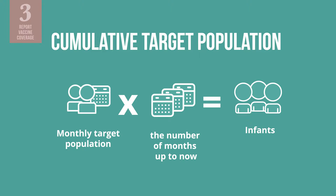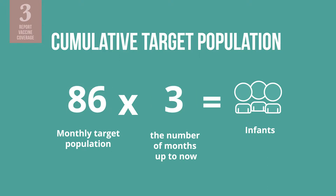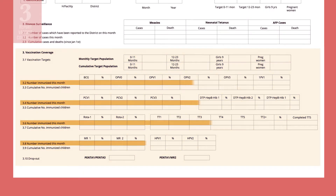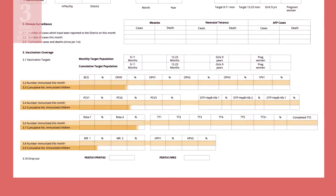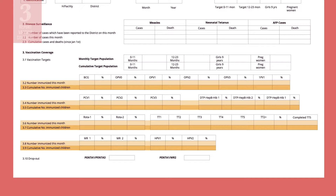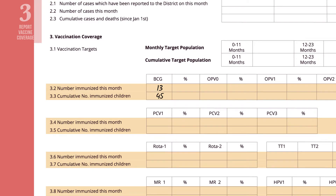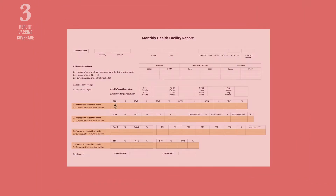So, let us say that the health facility in our previous example is creating a report in March, which is the third month of the year. If we take the health facility's monthly target population of infants, 86, and multiply it by 3, the total is 258 infants. For every dose of a vaccine administered, first write down the number of people immunized this month, as well as the cumulative number of immunized people so far this year. For example, in March, you would write down the number of people immunized in March, then the cumulative number of people immunized in January, plus February, plus March. You can find this information in the immunization register or on the tally sheets.